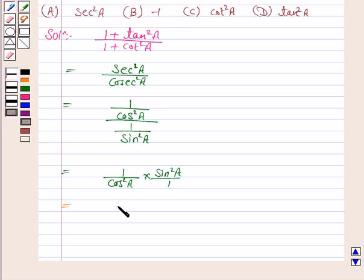So this is equal to sin square A upon cos square A which is equal to tan square A. So the given expression is equal to tan square A. The correct option is option D.